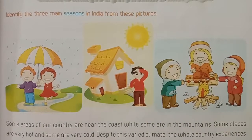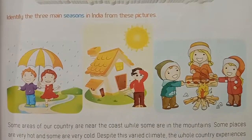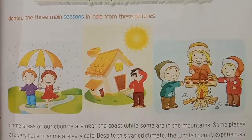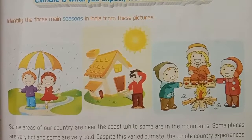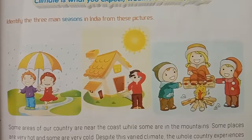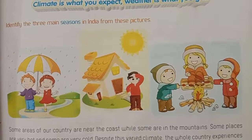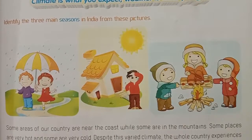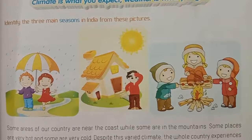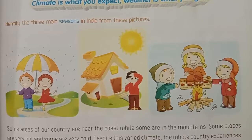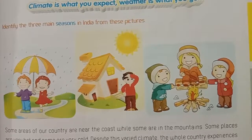Some areas of our country are near the coast while some are in the mountains. Some places are very hot and some are very cold. Despite this varied climate, the whole country experiences the same cycle of seasons: the summer season from March to June, the rainy season from July to October, and the winter season from November to February, with some variations.